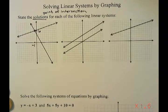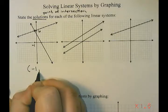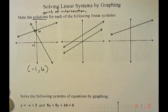So the solution for this particular set of linear systems is the point negative 1 and 6 because that's where they intersect.